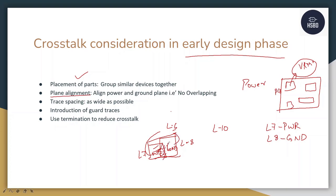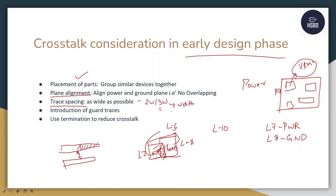The next consideration is trace spacing. As I already mentioned, whenever there are two transmission lines, we need to increase the spacing. As soon as you increase the spacing to a very high level, the crosstalk will definitely reduce because there will be less or no coupling. As per industrial standard, we use around 2W and 3W spacings, where W is the width of the trace — everything is calculated on the basis of the trace width.